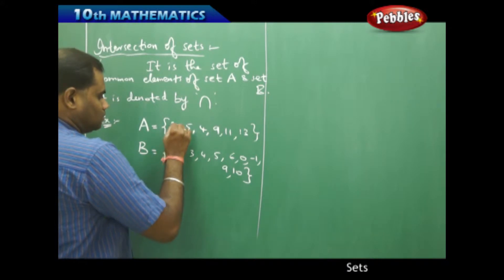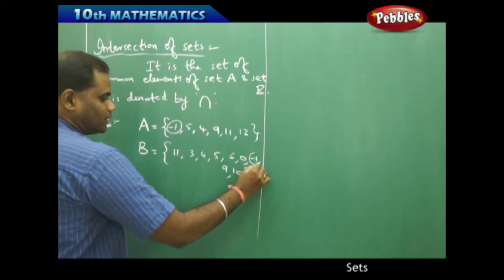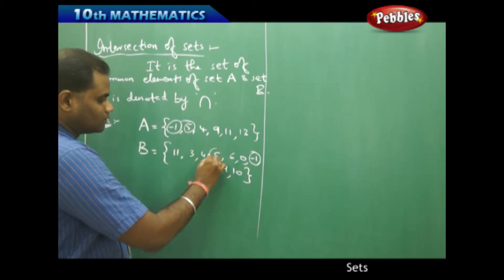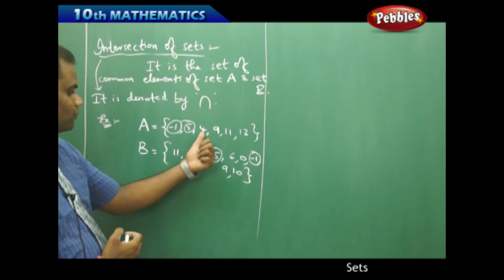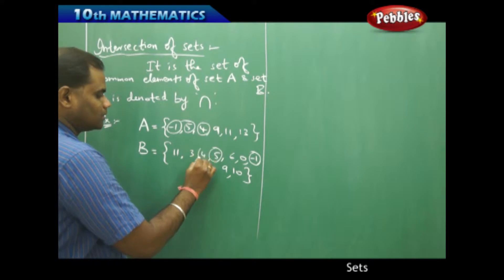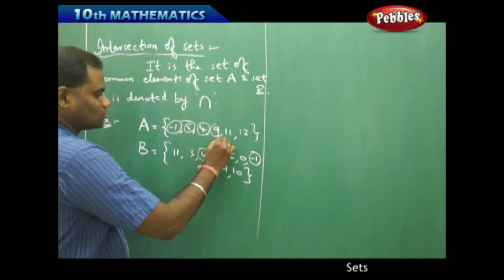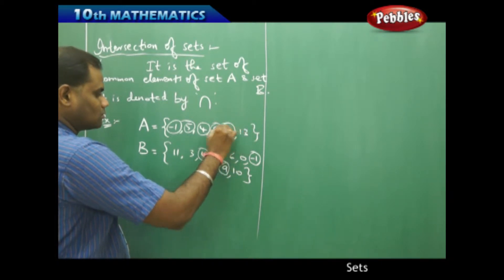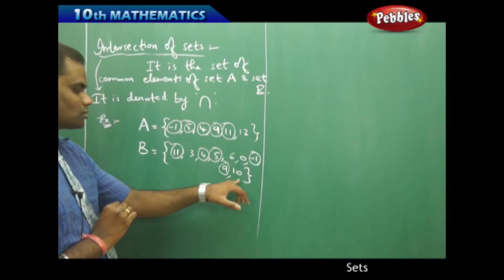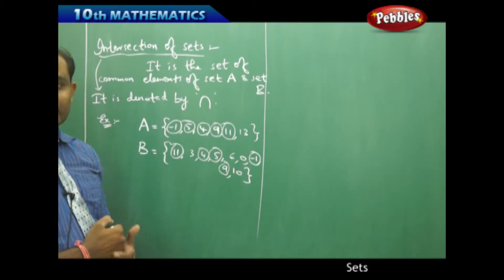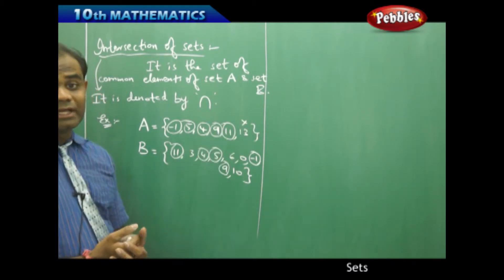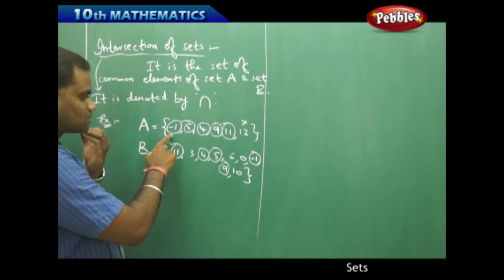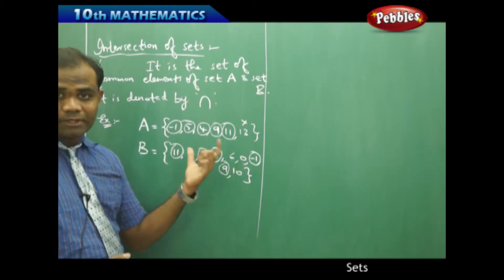Looking at the elements: -1 is a common element, 5 is also a common element, 4 is also a common element, 9 is also a common element, and 11 is also a common element. But 13 is not a common element because 13 does not appear in the second set, so it does not form an element in the common set. All the common elements identified are -1, 5, 4, 9, and 11.